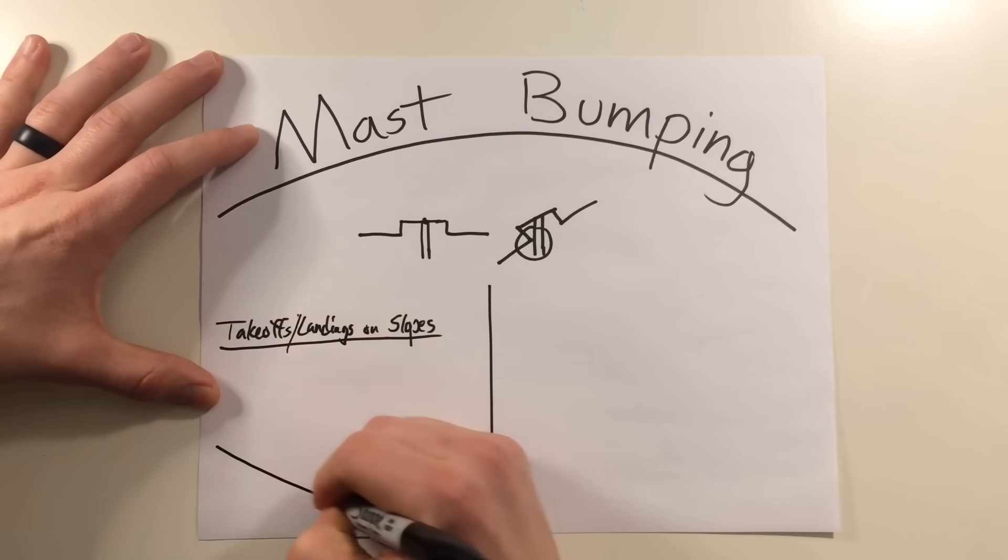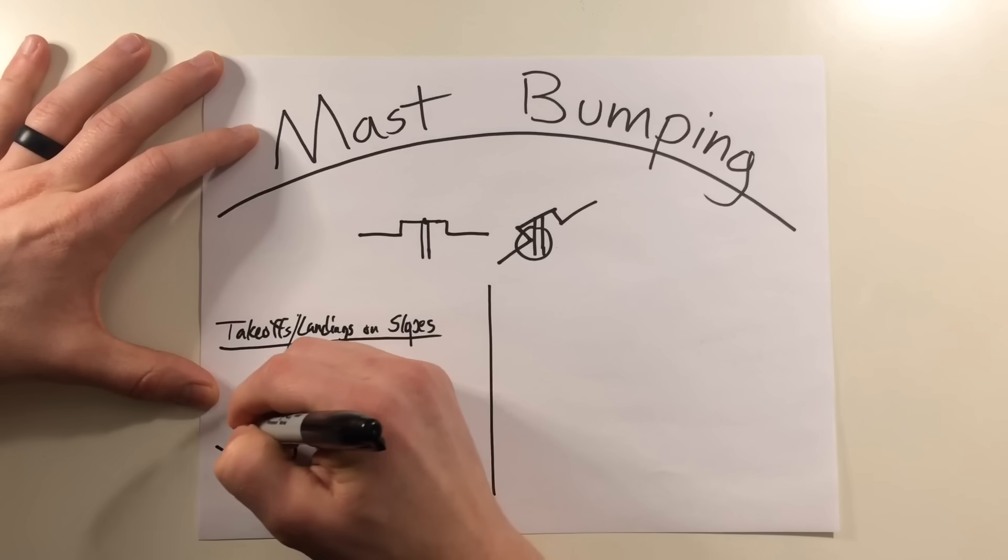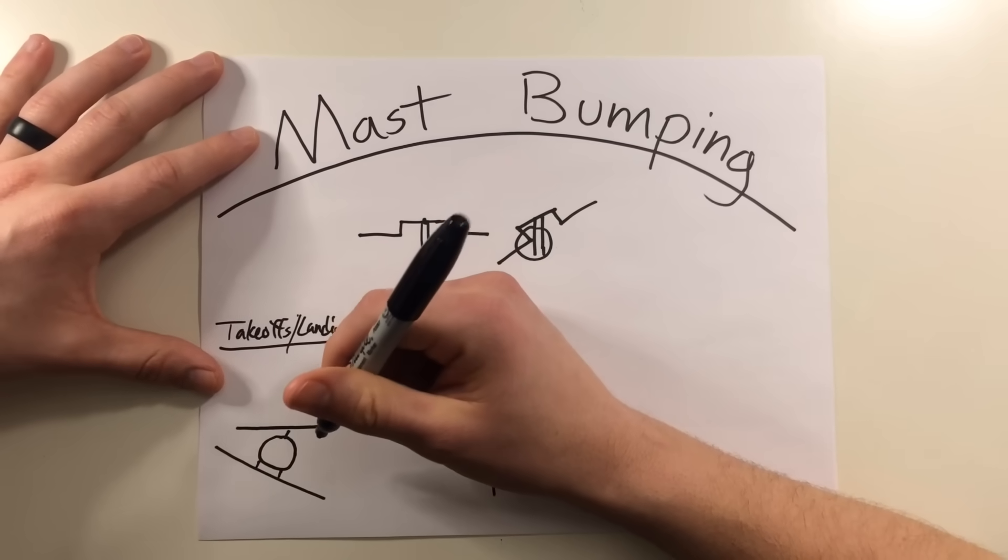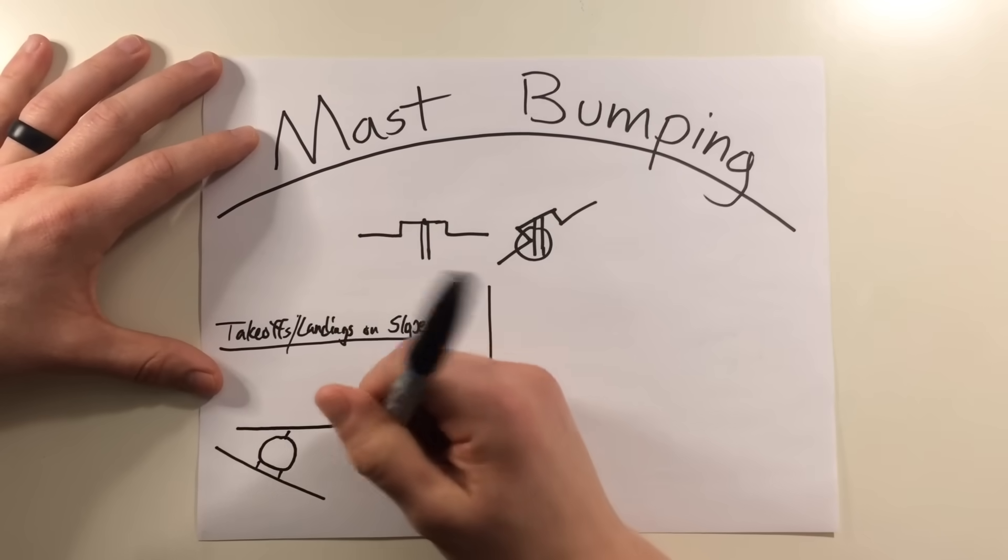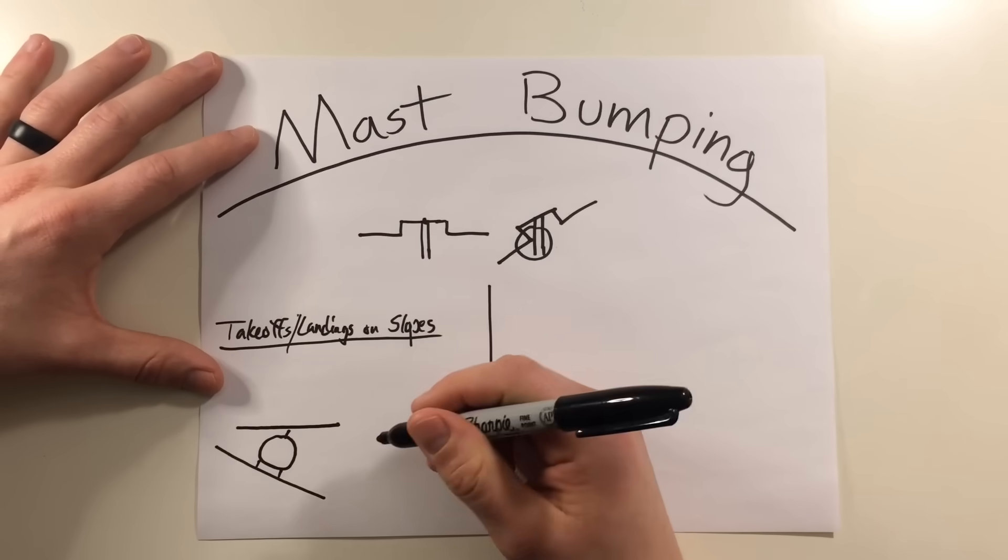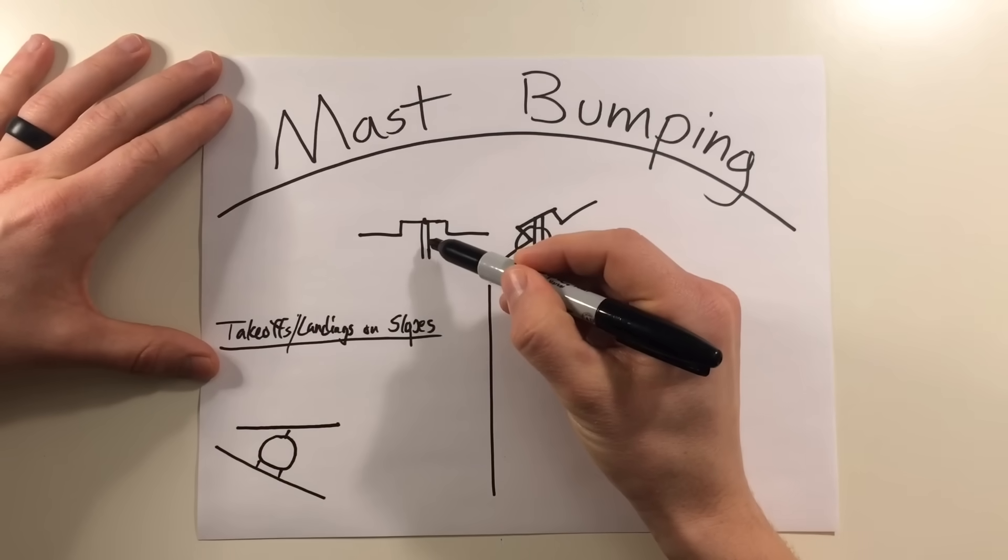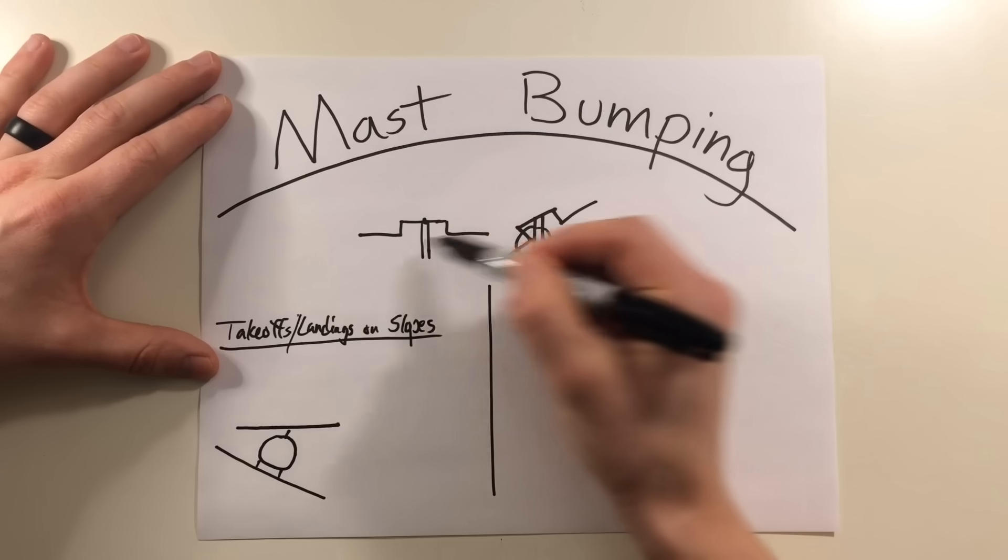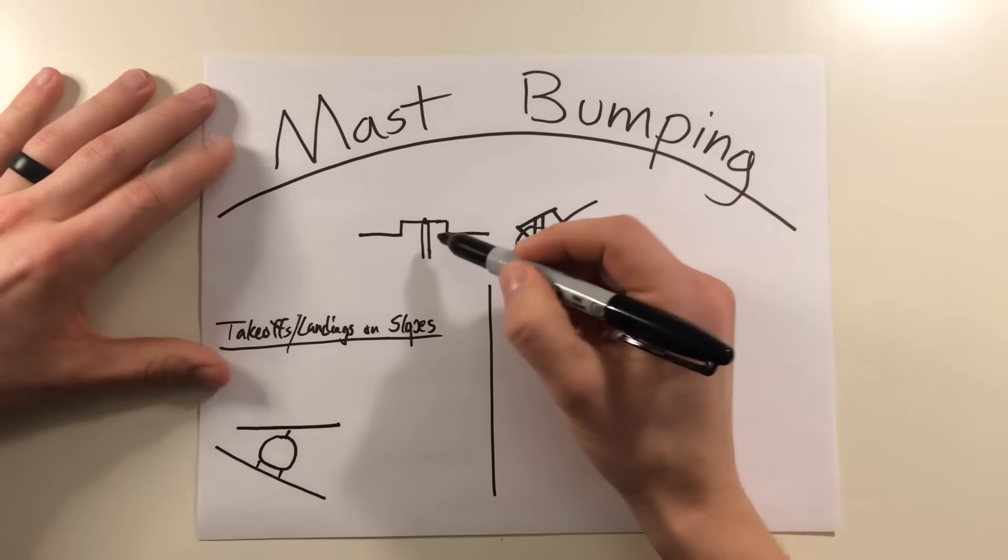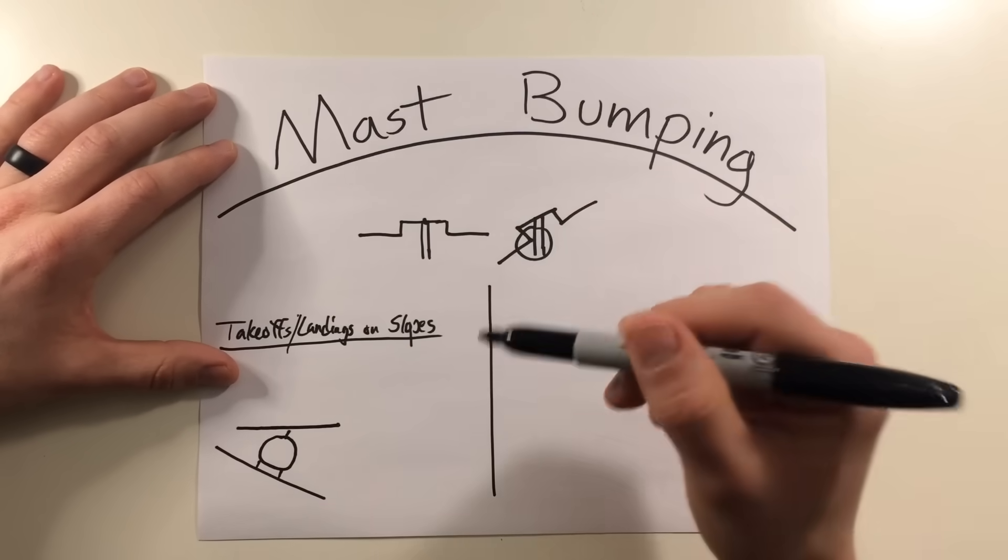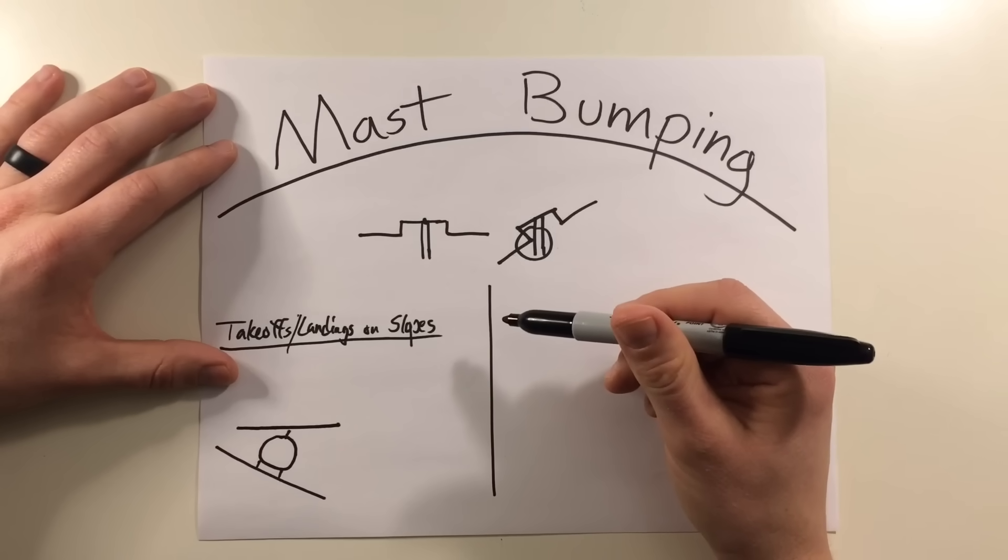Well, let's say we have our sloping terrain right here. We have our main landing gear making contact. There's the fuselage, mast, and now we have the rotor system. As the pilot applies cyclic in the direction of the slope with little or no collective applied, it's easy to see how this can happen. You go from a system that's very rigidly staying perpendicular to the mast and now it's getting to a point where potentially getting into some kind of mast bumping.